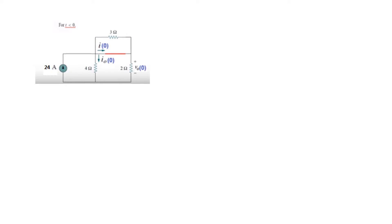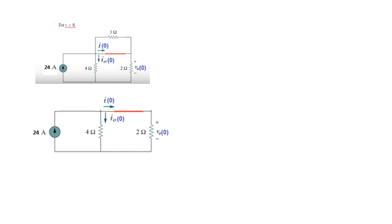For T less than 0, this was the circuit. Notice that the short circuit is in parallel with the 3-ohm resistor. Zero ohms in parallel with 3 ohms gives 0 ohms, so the entire parallel combination is replaced with a short circuit. Any resistor that is shorted becomes 0 ohms, so the equivalent circuit simplifies accordingly.